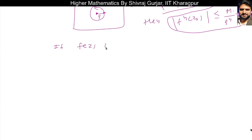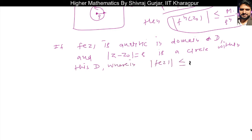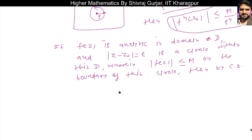Formally: if f(z) is analytic in domain D, and the circle |z - z₀| = rho lies within domain D, and the modulus of f(z) is always less than or equal to M on the boundary of this circle, then by Cauchy's Inequality Theorem we say that the modulus of f^(n)(z₀) will always be less than or equal to M times rho^n times n factorial.